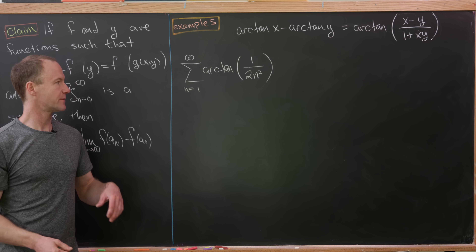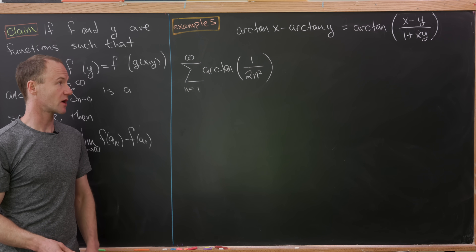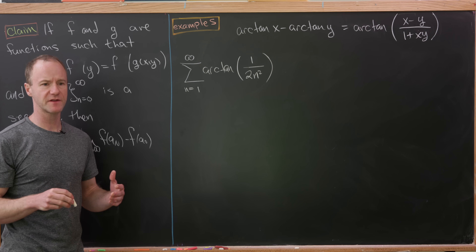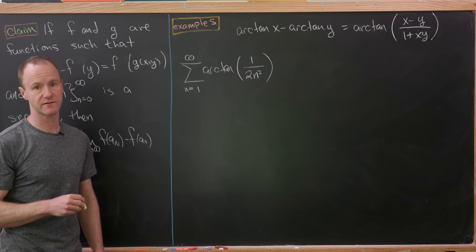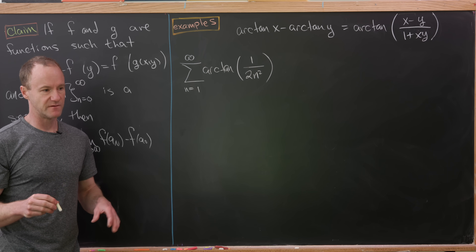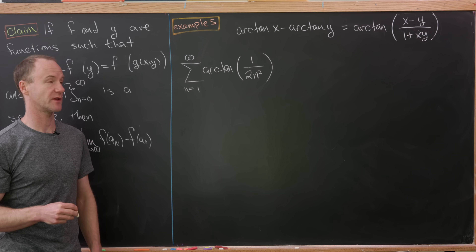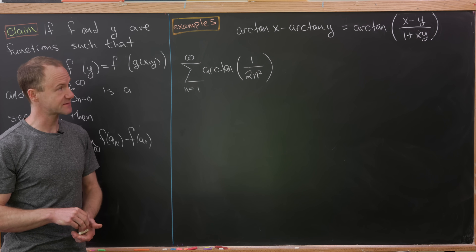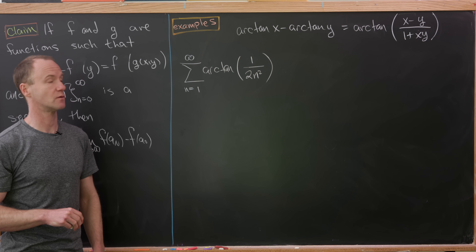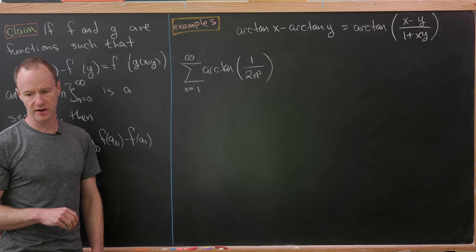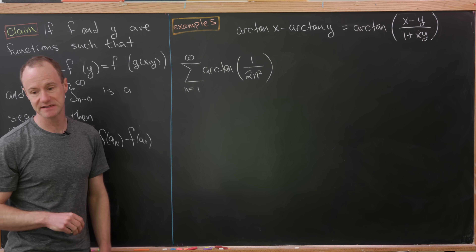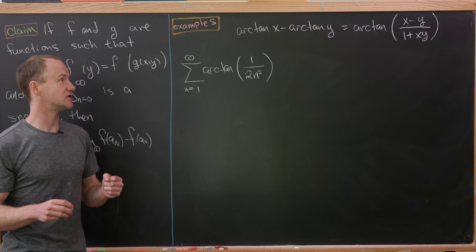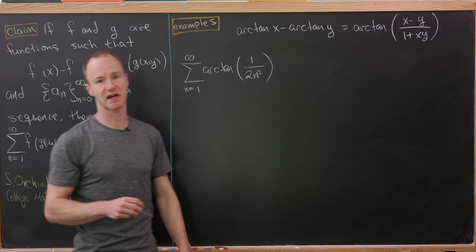Now that we've seen how this works, let's look at some examples. For our first example, we'll look at the sum as n goes from 1 to infinity of the arctan of 1 over 2n squared. Recall the nice subtraction formula for the inverse tangent, which you can derive via the addition formula for the tangent function: arctan x minus arctan y equals arctan of (x minus y) over (1 plus xy). The goal is to rewrite the argument of arctan so we can pull it apart into two sequence-type terms.